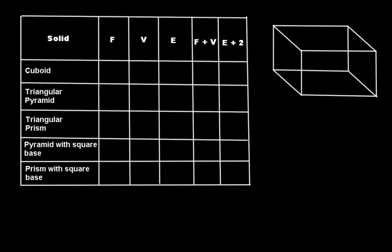Let's start with the cuboid. How many faces does a cuboid have? It has six faces: front, back, top, bottom, right side, and left side. So it has six faces. How many vertices does a cuboid have? It has one, two, three, four, five, six, seven, and eight vertices. How many edges does a cuboid have? It has one through twelve — so twelve edges.